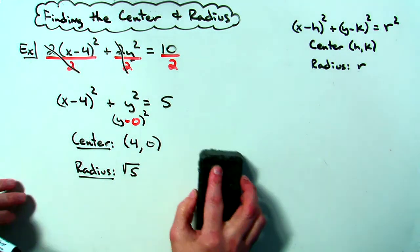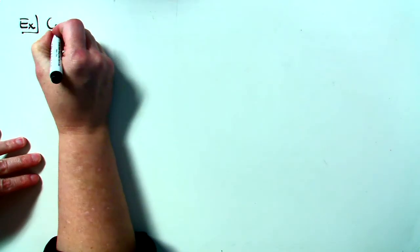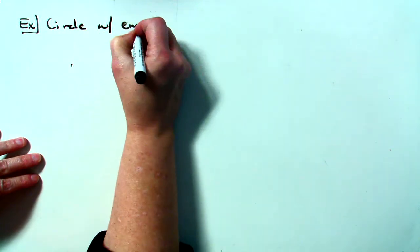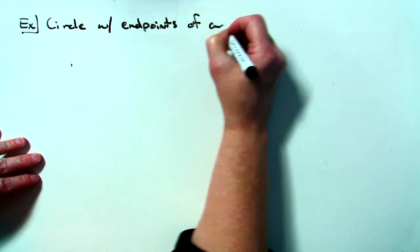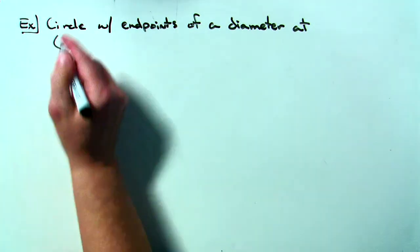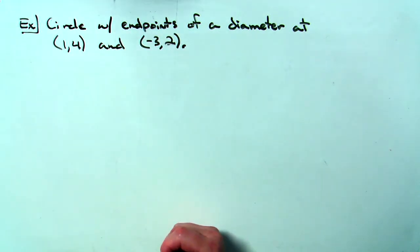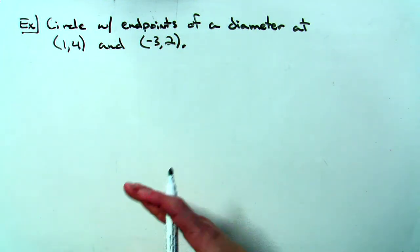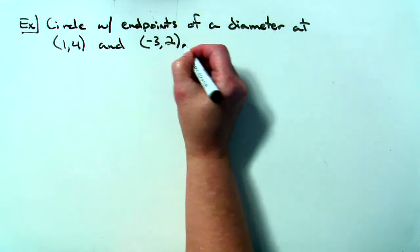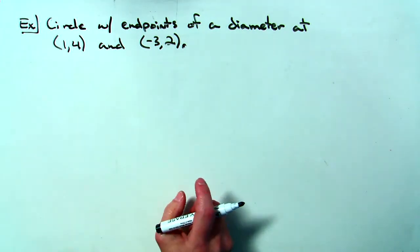Now let's do another example. They might not even give you an equation — they might give you just some information about your circle. For example, they might tell you that you have a circle with endpoints of a diameter at maybe (1, 4) and (negative 3, 2). They just give you some information about the circle and are still wanting you to find the center and the radius. It's going to be helpful to take that information, use what you know from geometry, and come up with the standard form of the equation.